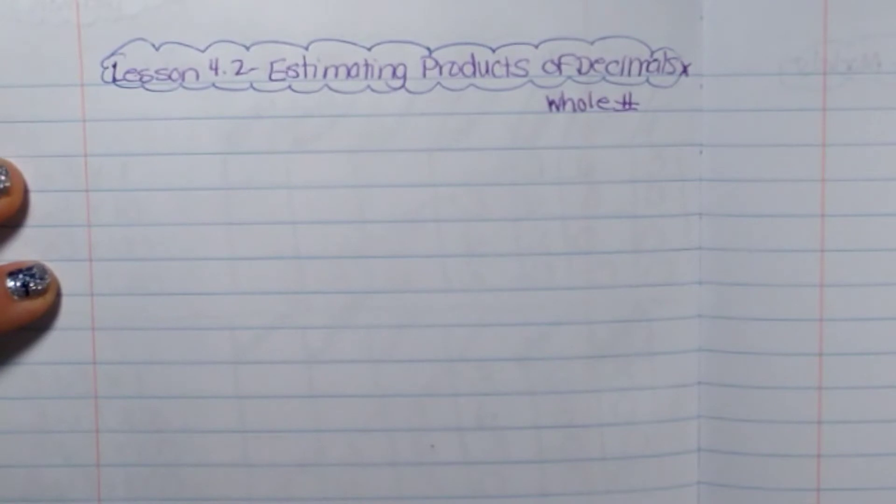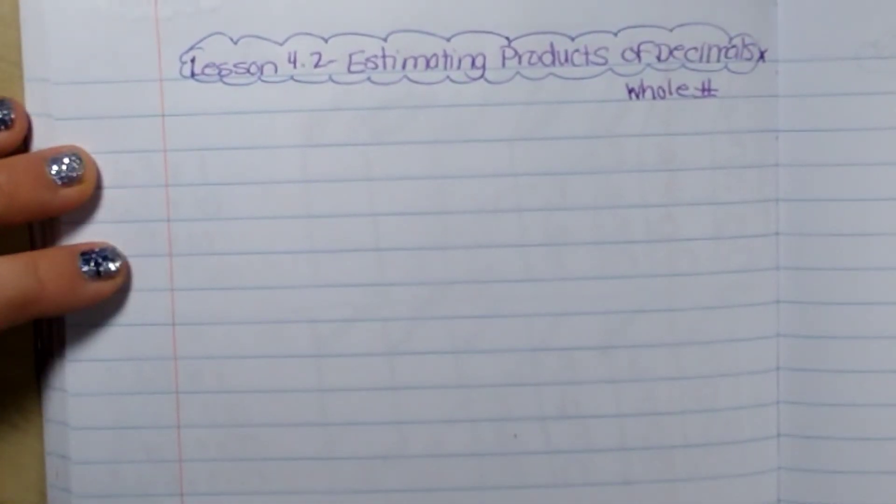But right now we're doing one decimal or a whole number and a decimal times a whole number. So there's only one decimal in the problem.